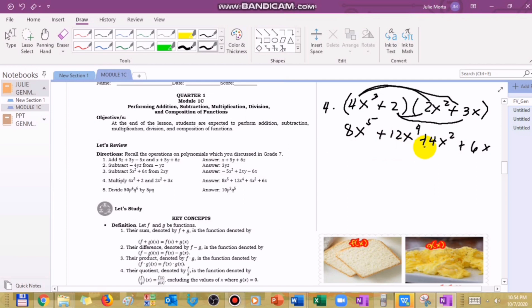Combine like terms. There are no like terms because when you say like terms, the variable together with the exponent must be the same. In this case, although they all have variable x, notice the exponents are different. So this is now your final answer.